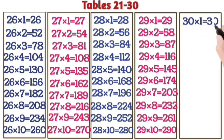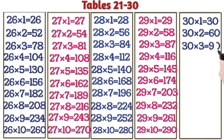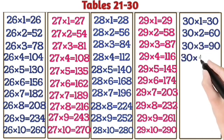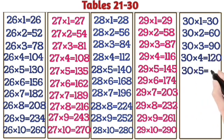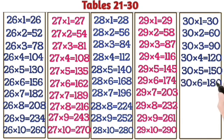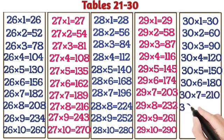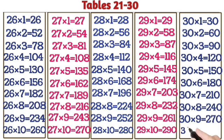30 ones are 30. 30 twos are 60. 30 threes are 90. 30 fours are 120. 30 fives are 150. 30 sixes are 180. 30 sevens are 210. 30 eights are 240. 30 nines are 270. 30 tens are 300.